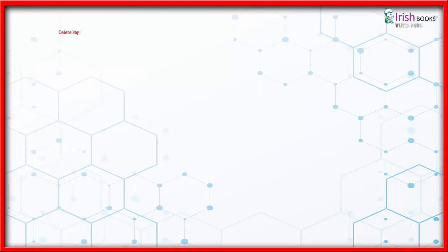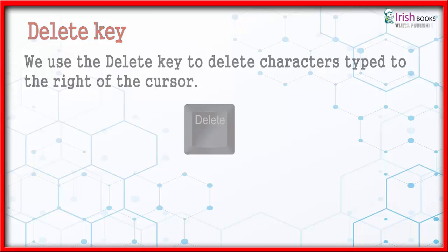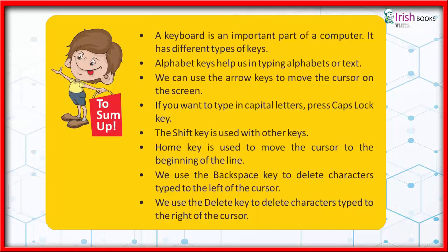Delete key: we use the delete key to delete characters typed to the right of the cursor. Summary: a keyboard is an important part of a computer. It has different types of keys. Alphabet keys help us in typing alphabets or text. We can use the arrow keys to move the cursor on the screen. Press the caps lock key to type in capital letters. The shift key is used with other keys. The home key moves the cursor to the beginning of the line. We use the backspace key to delete characters to the left of the cursor, and the delete key to delete characters to the right of the cursor.